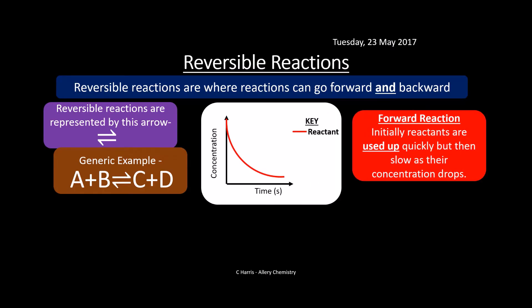We can plot this as a graph. For the forward reaction, initially the reactants are used up but then slow as their concentration drops. You can see this is for a reactant — initially lots of reactants react readily, it goes steeply and then curves and flattens out towards the end because it's obviously a lot slower.